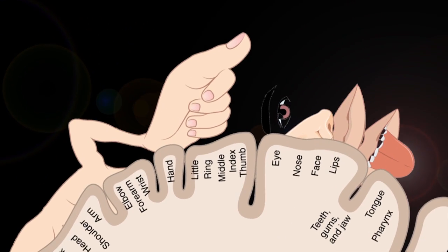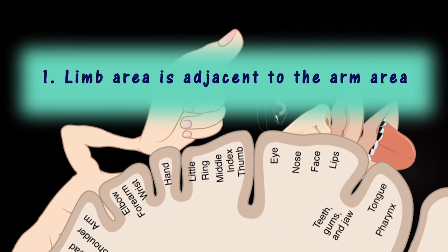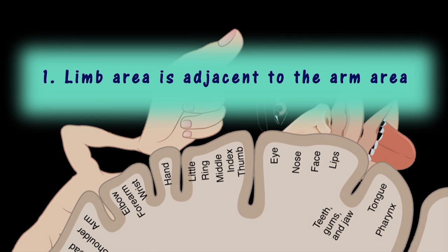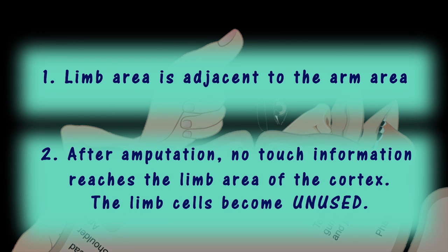Based on what we've just learnt, the arm area sits right next to the face area in the cortex. And since the limb's been cut off, no touch information can reach the limb area of the cortex, leaving the limb cells unused. But how is this all related to phantom limb theory?